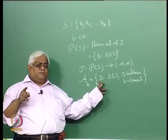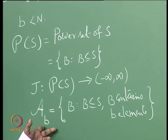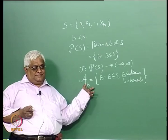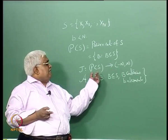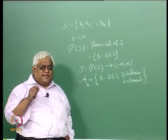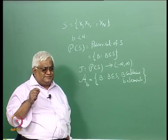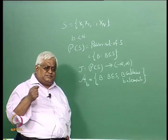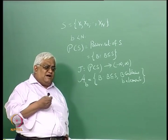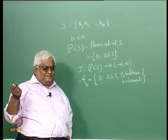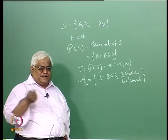That means we are going to look at all possible subsets of S containing small b elements. For every subset of S we have to somehow attach a value which tells you the importance of that set. The word importance, depending on the context, situation to situation, it may differ. It may be a negative value also; it need not always necessarily be a positive value.